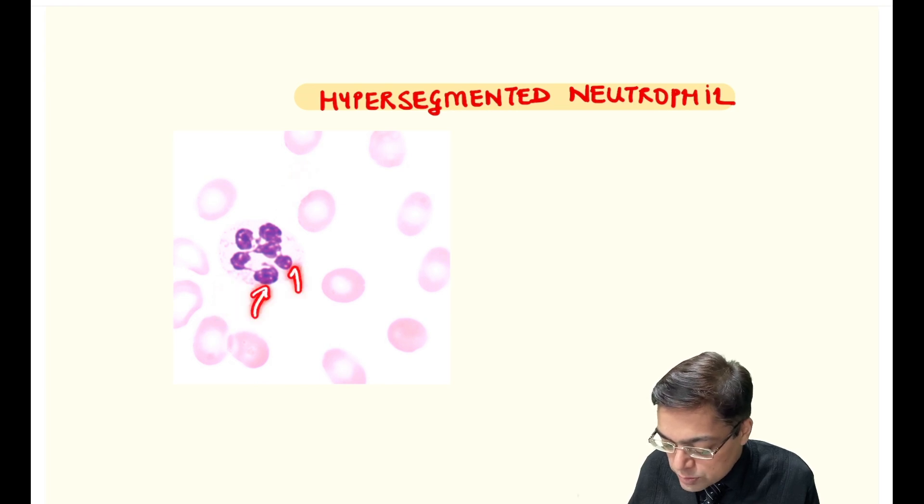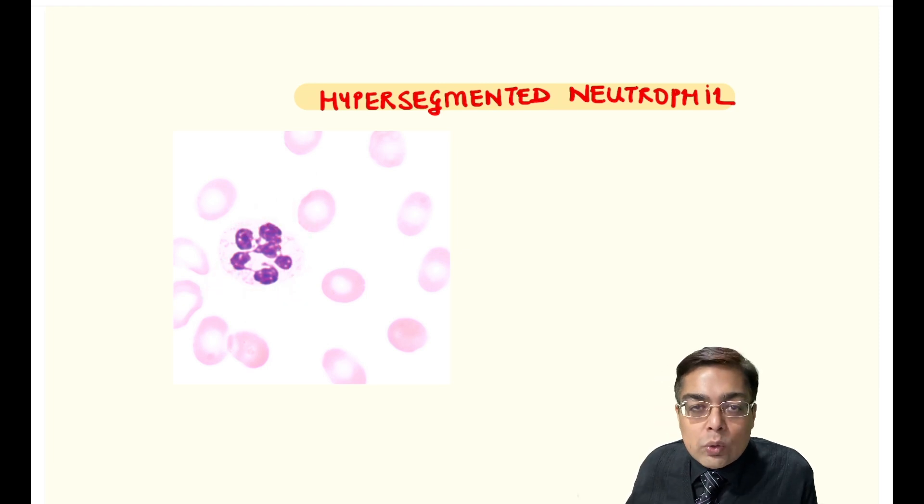To be specific, the number of nuclear lobes here: 1, 2, 3, 4, 5, and 6. Even if you have one neutrophil with 6 nuclear lobes, or more than 5% of neutrophils with 5 nuclear lobes, that is an example of megaloblastic anemia.